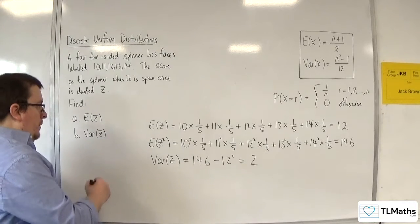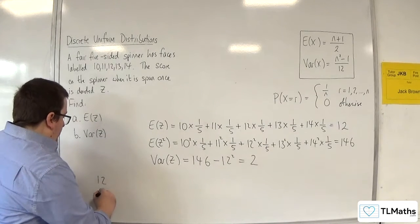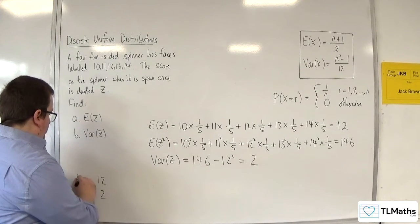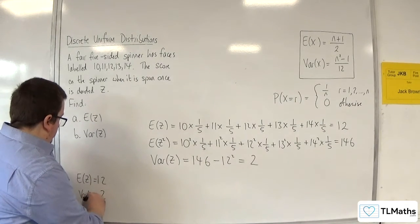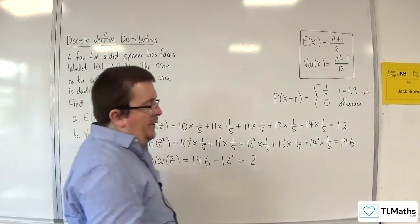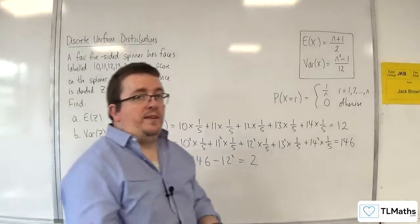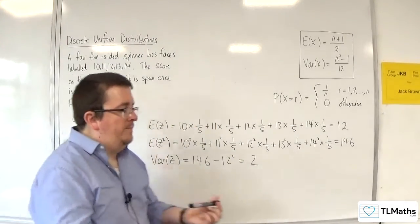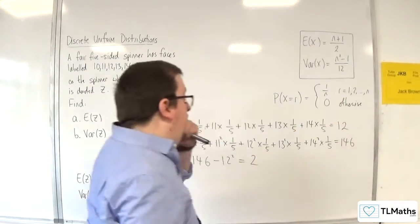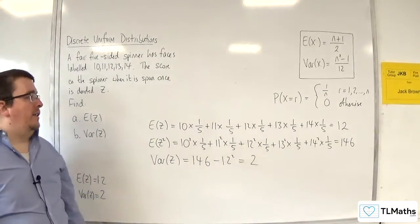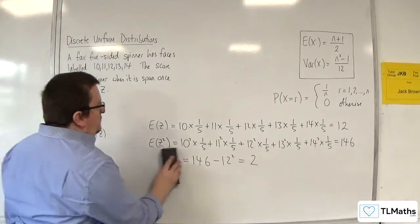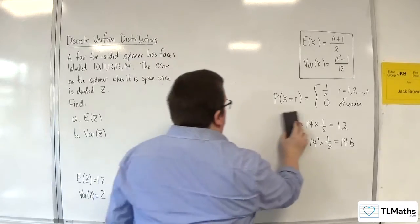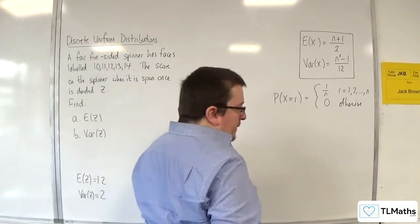Okay, now the two values that we're getting then are 12 and 2. Let's just make a note of them down here. So that's the long-winded way. Now obviously we don't want to have to do that all the time, because some of the problems that we're going to deal with are going to be much larger.